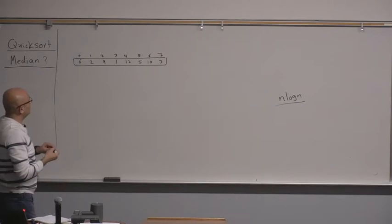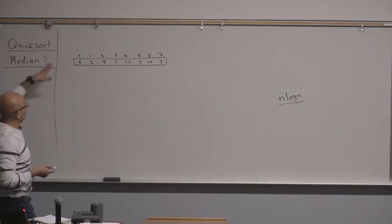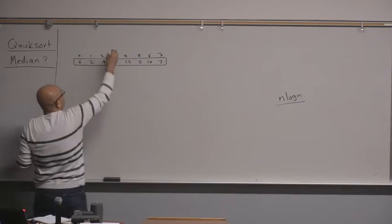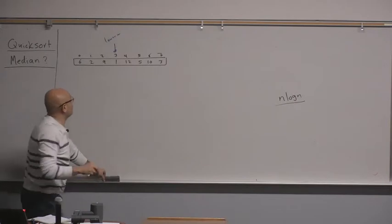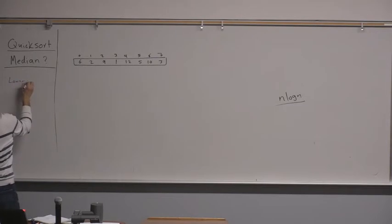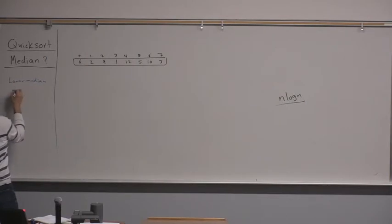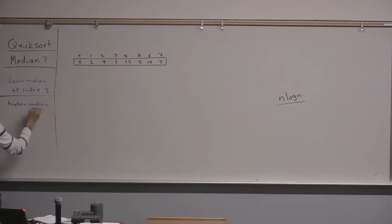In this case, the median is the element that ranks in the middle. When we have an even number of elements, the lower median is the element at index 3 after sorting, and the higher median is at index 4.